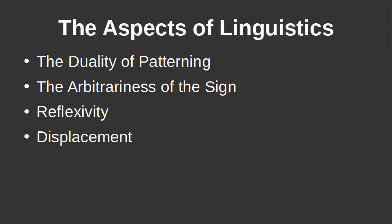Moving on, there are four aspects to linguistics: the duality of patterning, the arbitrariness of the sign, reflexivity, and displacement. We will now cover each of these in a simple yet descriptive way.